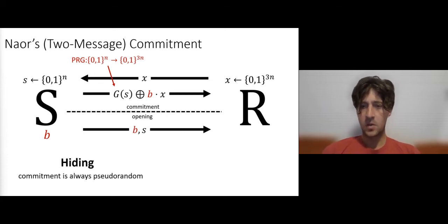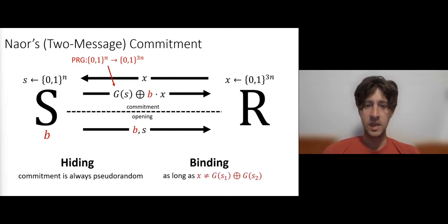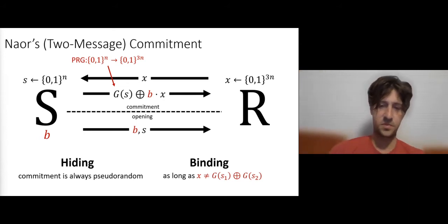This commitment, it's easy to see that it's hiding because commitments are always pseudorandom, regardless of the bit B. And it is also binding as long as the receiver's message x satisfies certain properties. Specifically, it shouldn't be the XOR of any two PRG images. And by the way we chose our parameters, PRG is sufficiently expanding its image. It's very sparse. So this is only going to happen with negligible probability.